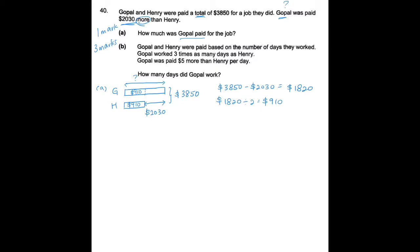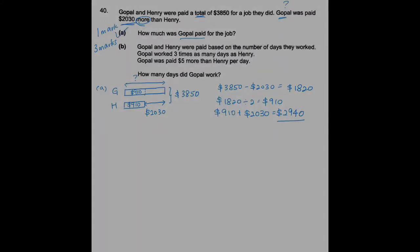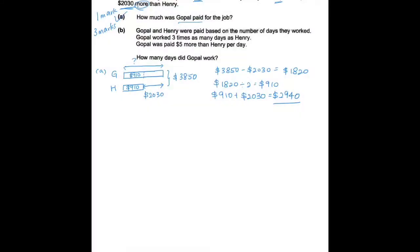But we want to find Gopal, so we have to add. So I get $2,940. I hope you get the same answer as me. So we are done with part A. Let's continue with part B.